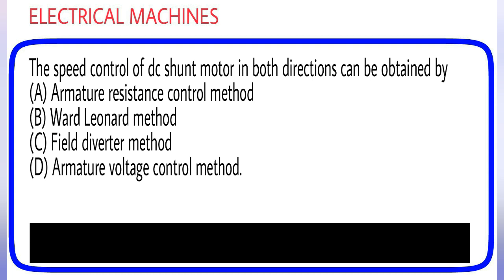The speed control of DC shunt motor in both directions can be obtained by: (A) Armature resistance control method, (B) Ward Leonard method, (C) Field diverter method, (D) Armature voltage control method. Answer is option B.